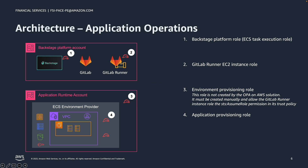Once the application resources are provisioned, the developer will want to manage their application. They'll want to perform operations such as configuring environment variables, starting and stopping the application, or reviewing application logs. These types of actions are initiated directly from the Backstage UI through widgets contributed by the OPA on AWS plugins. When these operations are triggered, the Backstage platform role will assume a special role which was created when the environment provider was provisioned. This role is referred to as the application operations role. This role's policy is configured to specifically allow only the operations that would be appropriate for the type of applications supported in the environment provider.